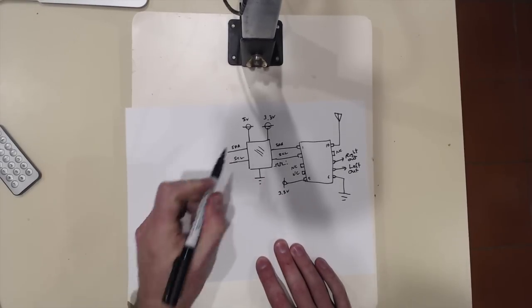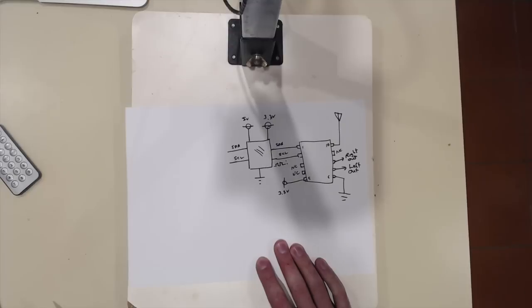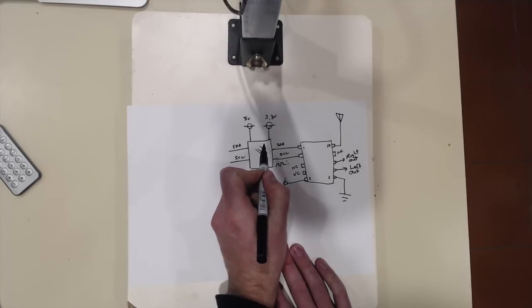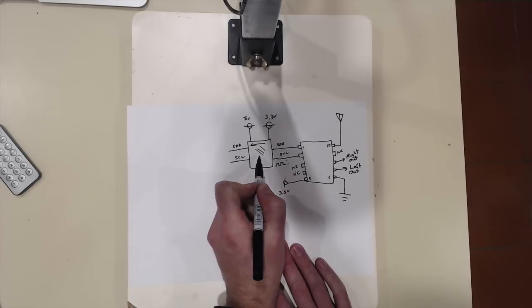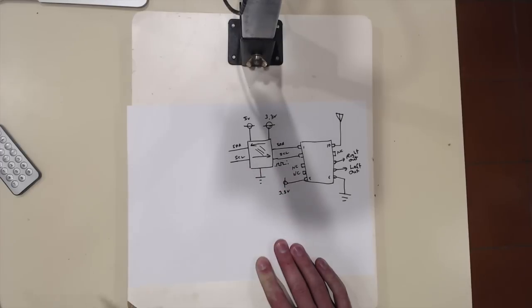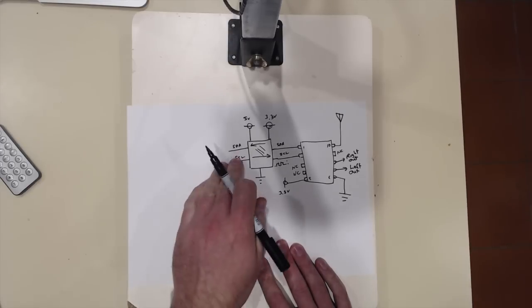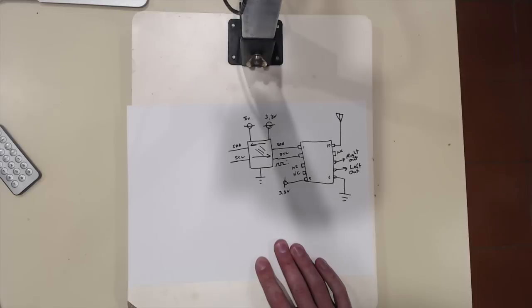And, the nice thing about this little PCB here is that it's bi-directional. So, it doesn't really matter whether the data is traversing in this direction or in the opposite direction. It'll do the translation to the appropriate voltage for the devices on either side of this bus.